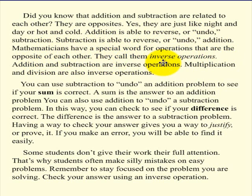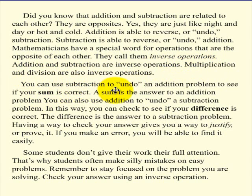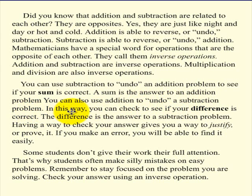Mathematicians have a special word for operations that are the opposite of each other. They call them inverse operations. Addition and subtraction are inverse operations. Multiplication and division are also inverse operations. You can use subtraction to undo an addition problem to see if your sum is correct. A sum is the answer to an addition problem.